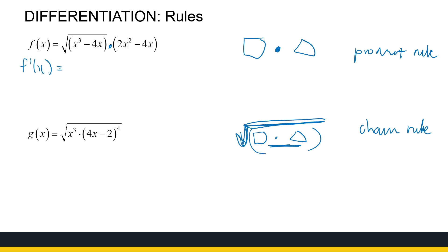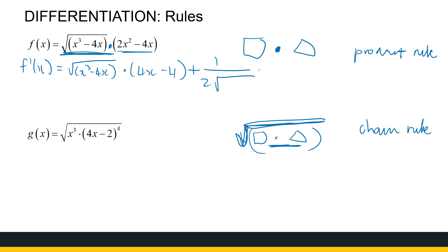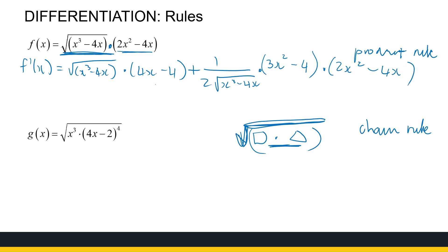For the first example, using the product rule: the first function times the derivative of the second — the derivative of (x² - 4x) is 2x - 4 — plus the derivative of the first times the second. Here the chain rule comes in, because the first function is the root of something: its derivative is 1 over 2√(x³ - 4x) times the derivative of x³ - 4x, which is 3x² - 4. Then multiply by the second function (x² - 4x).